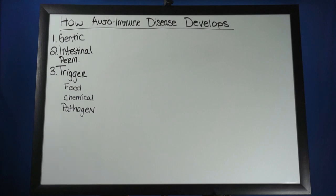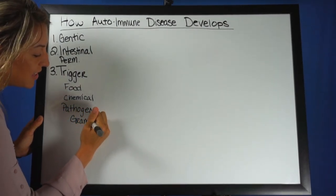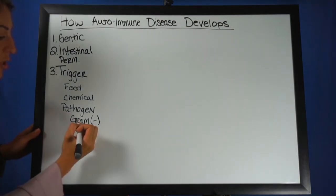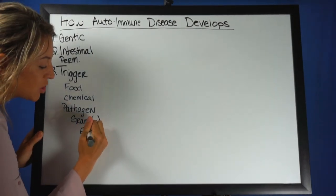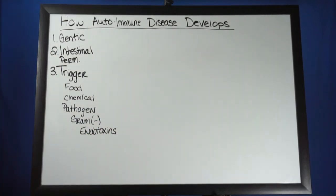With pathogens, here we're talking about the things that we can't really control. We can't put ourselves in a bubble, and we have to eat, we have to drink, and all of those things introduce us to different pathogens. And typically what we're talking about here are gram-negative pathogens that release endotoxins or lipopolysaccharides into our system. These endotoxins and lipopolysaccharides are some of the most potent immune triggers, and when we introduce those in the presence of intestinal permeability, this is a big driver for the development of autoimmune disease.